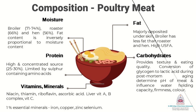The fat content of the meat is inversely proportional to the moisture content. Poultry meat is a very high and concentrated source of proteins; however, the concentration of sulfur-containing amino acids is limited. Poultry meat contains vitamins like niacin, thiamine, riboflavin, ascorbic acid and so on. Liver is a good source of vitamin A, B-complex vitamins and vitamin C. Poultry meat also contains some amounts of essential minerals like iron, copper, zinc and selenium.